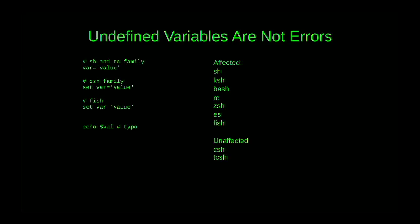Undefined variables not being an error affects all shells in that set of successful Unix shells other than C shell and TC shell. If you declare a variable called var and then echo a typo'd name val, every shell except C shell and TC shell will just print nothing and happily carry on. C shell and TC shell will actually print an error, which is nice.